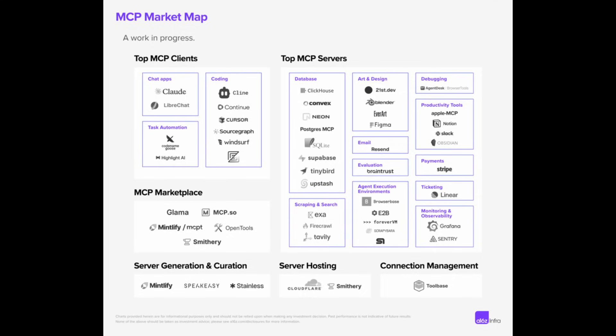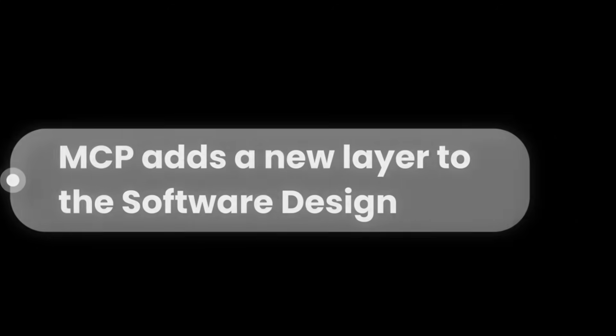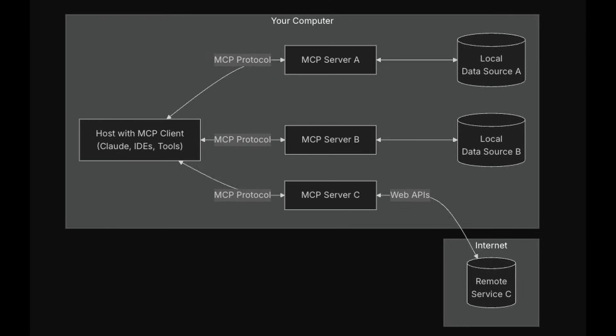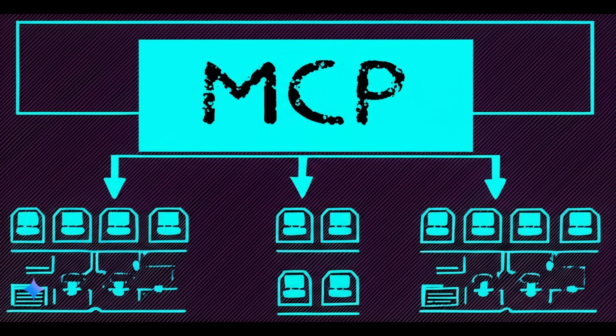Now let's talk about the bad things. MCP introduces a new layer of architecture, and this is always a problem when dealing with software design. You do not want to introduce an unnecessary layer into an already over-bloated system. If a team has a small project that just needs a basic AI answer, then using MCP might be overkill. Standalone or small-scale applications may find MCP overhead unnecessary, since a direct API call could do the job without extra machinery.